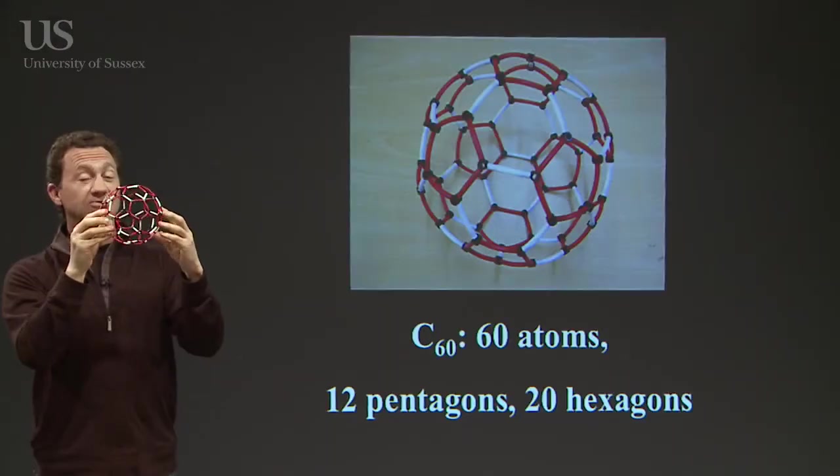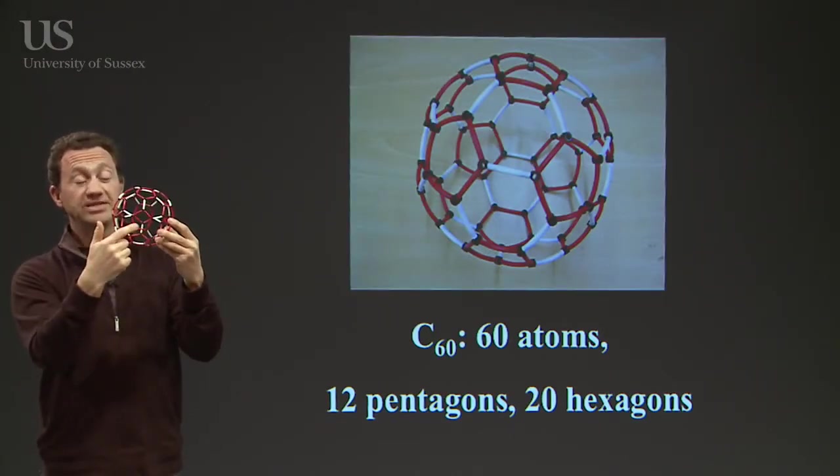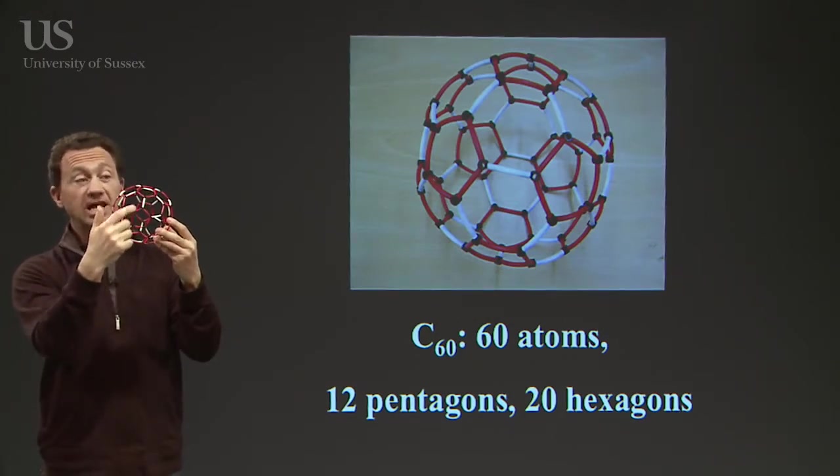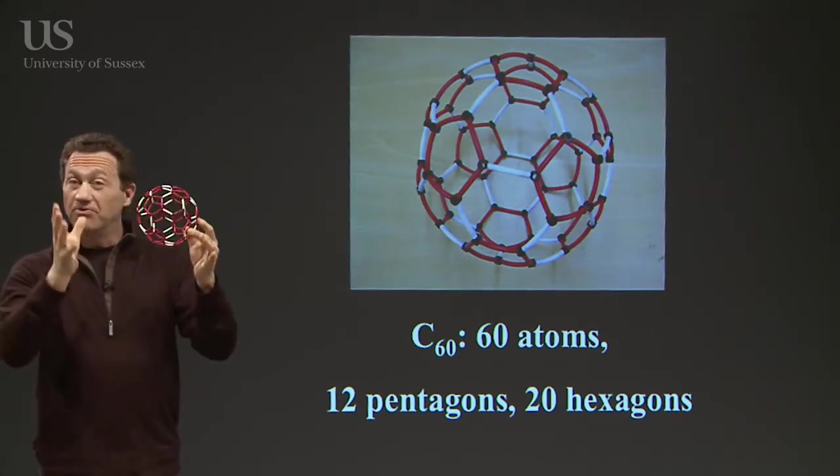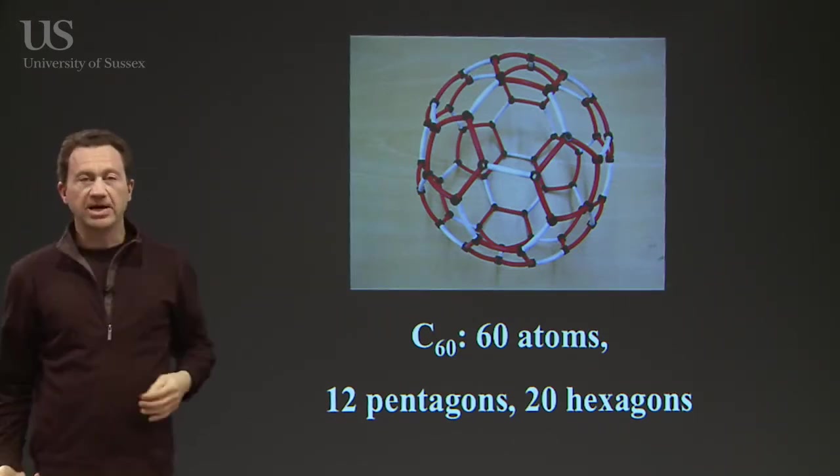In some ways, the secret to making the model of C60 is actually just to make 12 pentagons, say out of the red straws, and then simply join them up with a different color and the ball will form in front of your eyes. Let me go through those steps in the slides behind us.